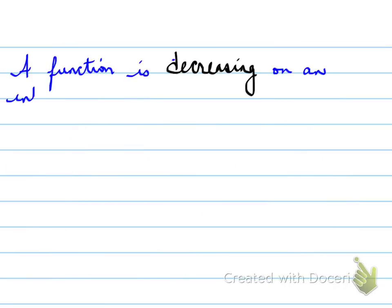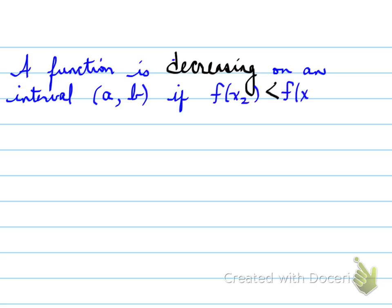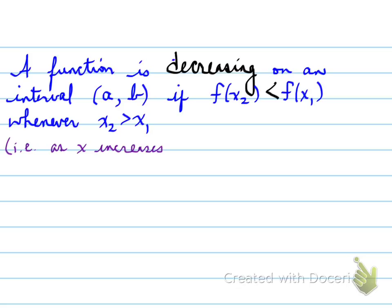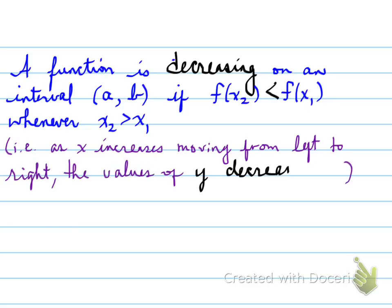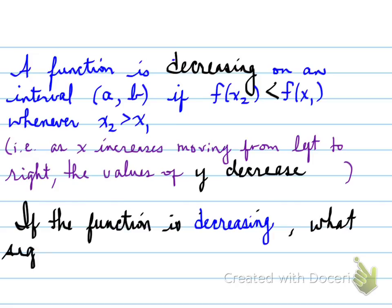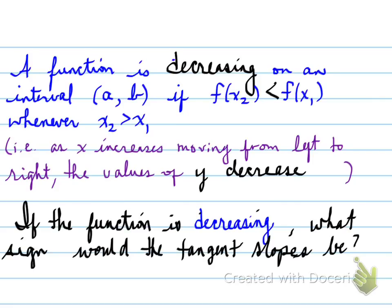A function is decreasing on an interval (a, b) if f(x2) is less than f(x1) whenever x2 is greater than x1. So as x increases, moving from left to right, the y values decrease. So if the function is decreasing, what sign would the tangent slopes be? The tangent slopes are going to be negative.